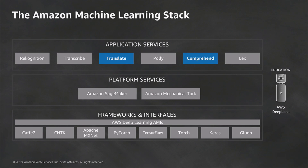At the platform level we have Amazon SageMaker, Amazon EMR, Glue, and Mechanical Turk — tools that make it easy to accomplish machine learning at scale with a managed platform. And underlying all of that are our frameworks, interfaces, and infrastructure, powered by things like our P3 instances.